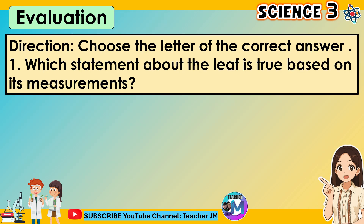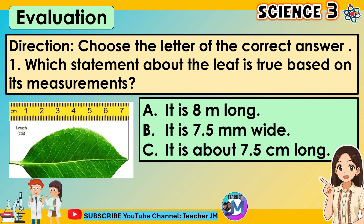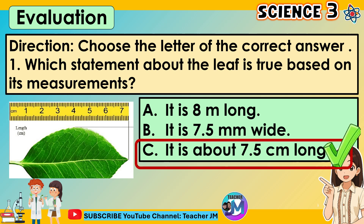Let's answer the evaluation. Directions: Choose the letter of the correct answer. Question 1: Which statement about the leaf is true based on its measurements? A. It is 8 meters long. B. It is 7.5 millimeters wide. C. It is about 7.5 centimeters long. The correct answer is letter C.